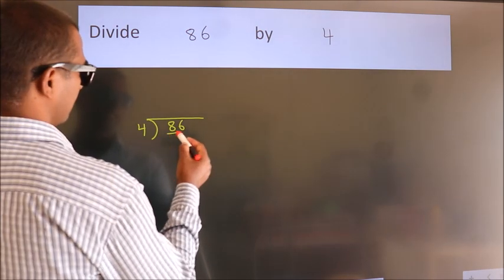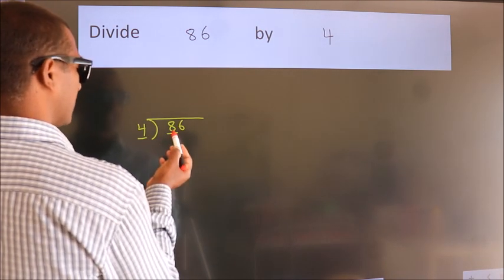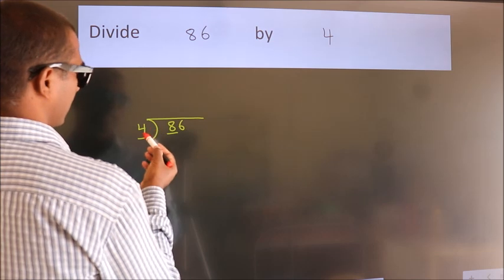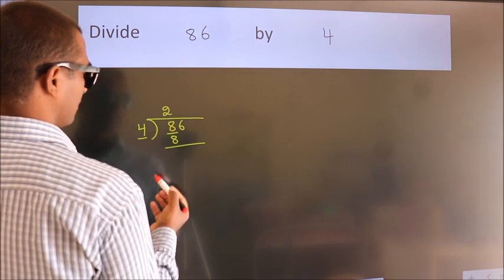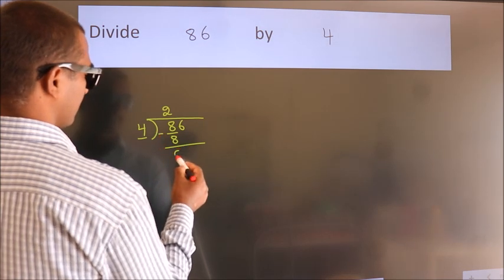Here we have 8, here 4. When do we get 8 in the 4 table? 4 2's 8. Now we should subtract. We get 0.